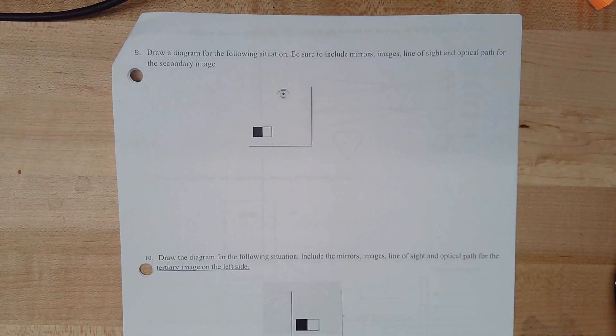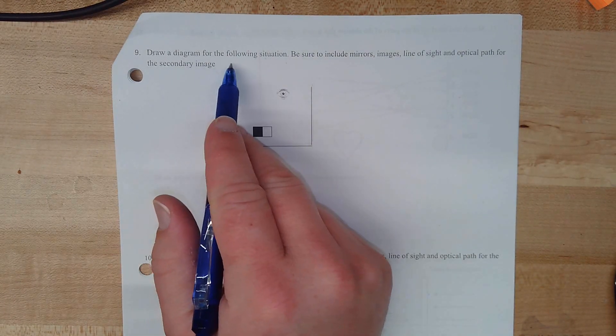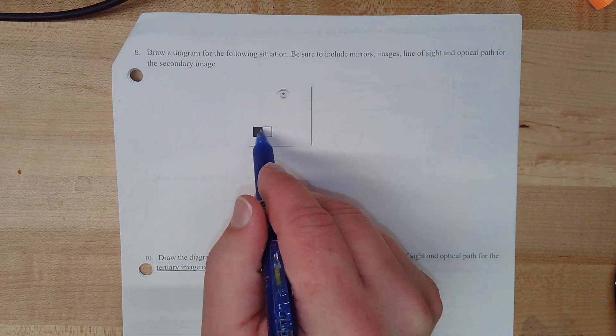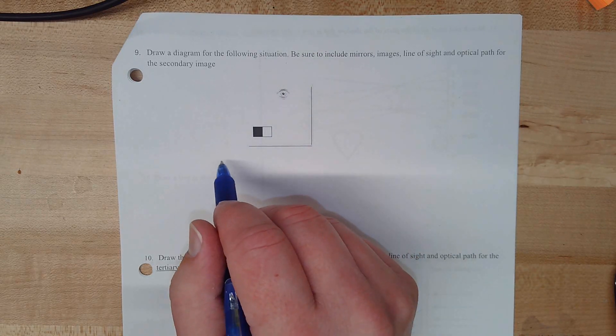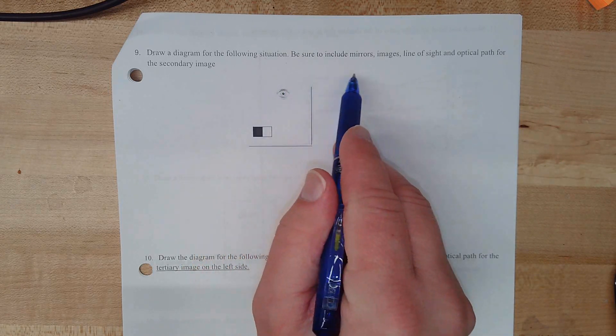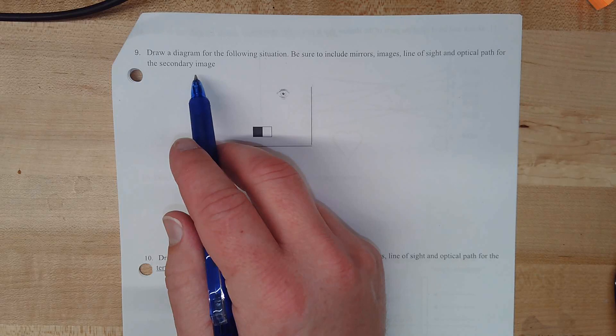Some of you have asked for this, so I figured we could go through it. In this problem, we've been asked to draw a diagram for the following situation. We have this little rectangle that's split black and white, and we have our eyeball, that's our observer. We are asked to include all mirrors, images, line of sight, and the optical path for the secondary image.